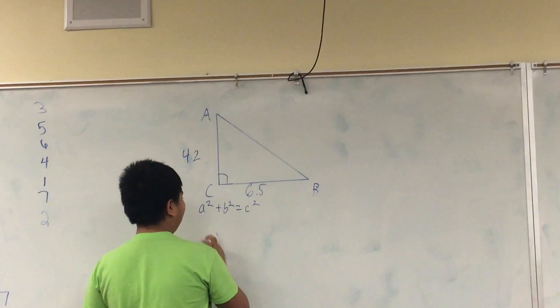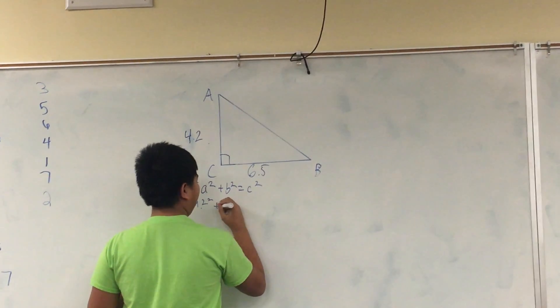Solve for C. 4.2 squared plus 6.5 squared equals C squared.